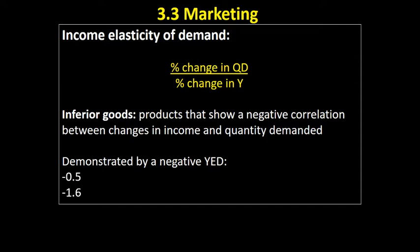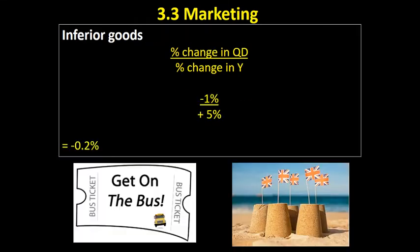If you're told that a product has a negative income elasticity of demand, you know that it is an inferior good, and as incomes go up the quantity demanded of that good will go down.